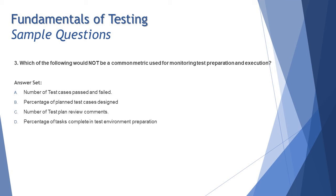Option A: number of test cases passed and failed that is only for execution. Option B: percentage of planned test cases designed that is only for preparation. Option C: number of test plan review comments. That's completely irrelevant. Test plan and when you talk about preparation and execution. Preparation is test design. Execution is executing the test cases. But C says number of test plan review comment that is completely related to static testing not at all dynamic testing.